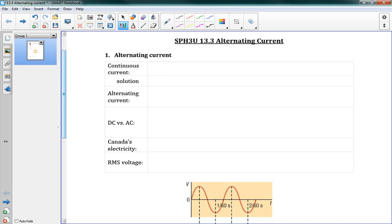So, continuous current, the problem here is that we can't move a magnet in the same direction forever.